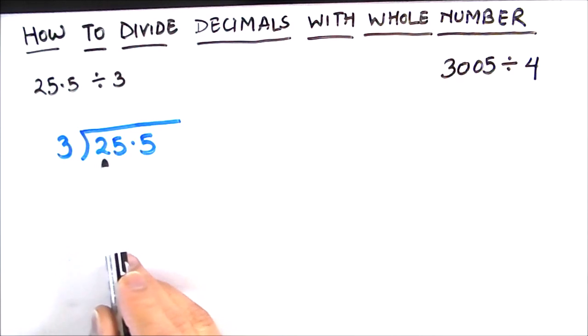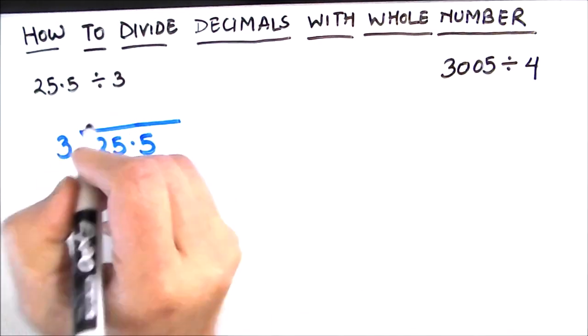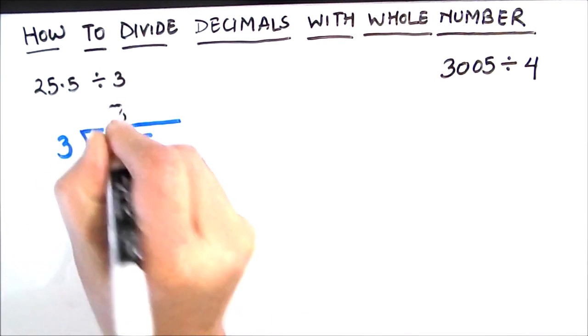Now we will check this number with the divisor. Our divisor is 3 which is more than 2, so we are going to take two numbers together. So now we are dividing 25 by 3. We will count the tables of 3 until we get 25 or less than 25. So 3 times 8 is 24 which is just less than 25, so we will write 8 here in our quotient.